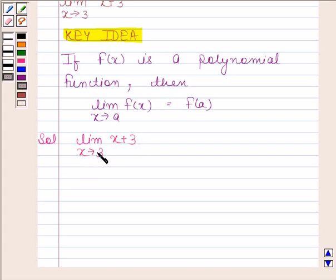In the key idea, we have learned that if f(x) is a polynomial function, then the limit of f(x) as x tends to a is f(a). Now here, x plus 3 is a polynomial function.